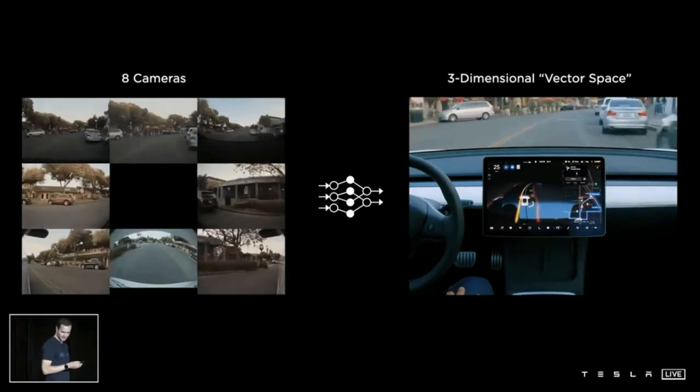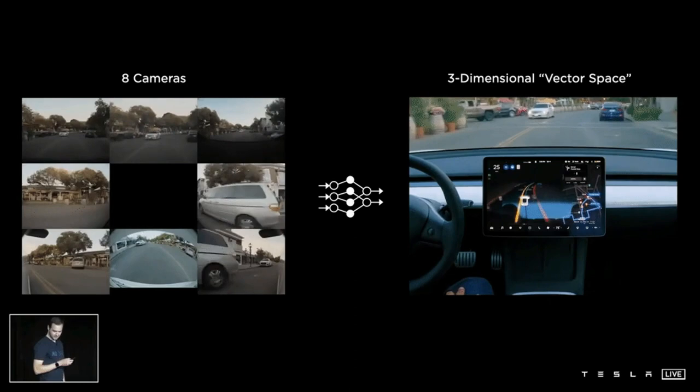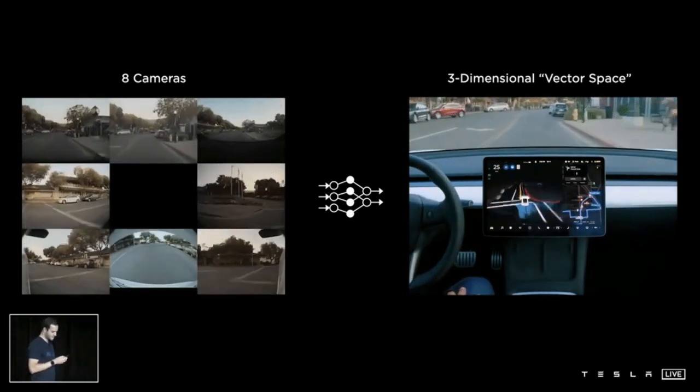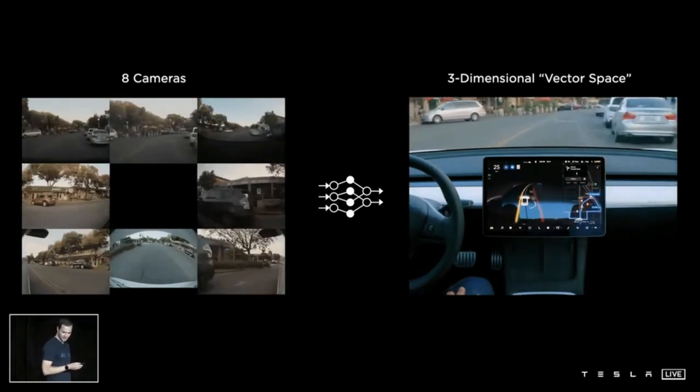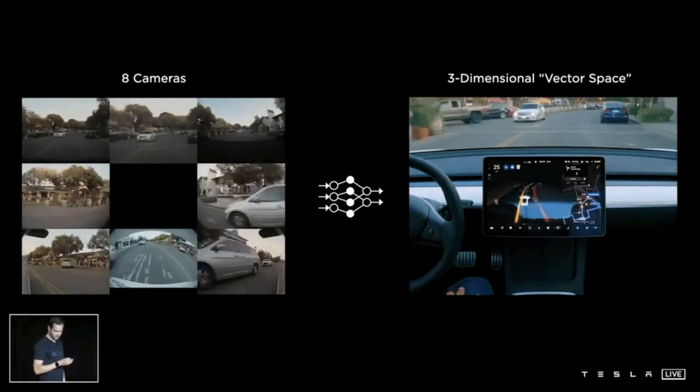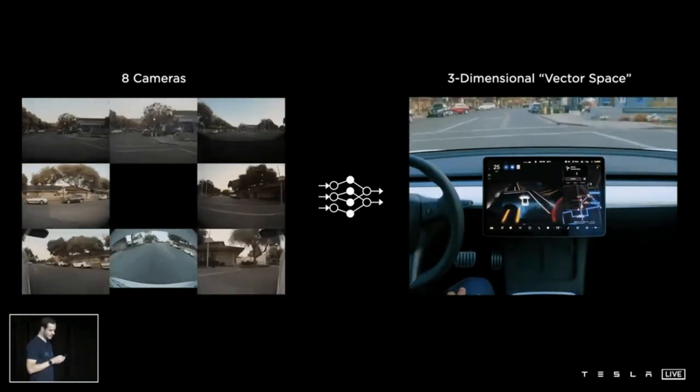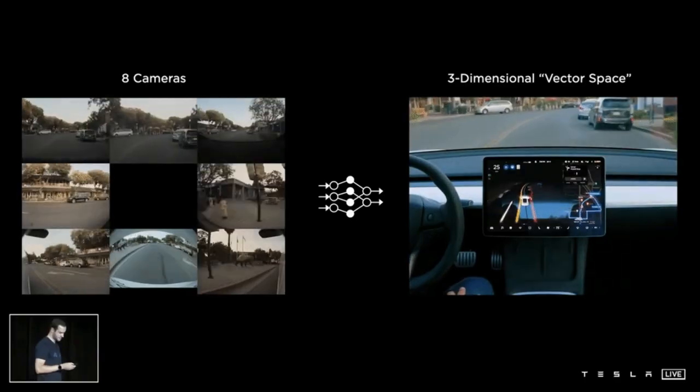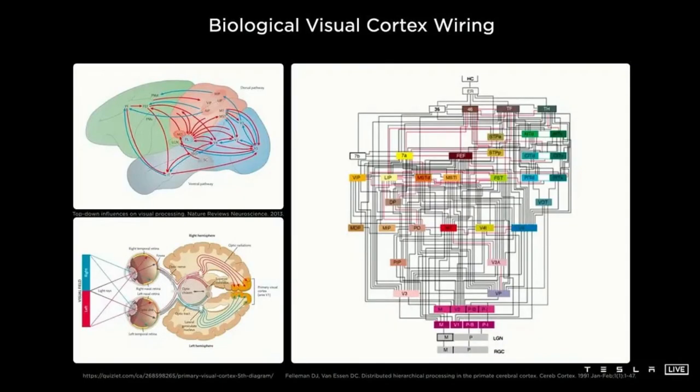The eight cameras, left, around vehicle generate three-dimensional vector space, right, through neural networks, which represents everything you need for driving, such as lines, edges, curbs, traffic signs, traffic lights, cars, and positions, orientations, depth, velocities of cars.